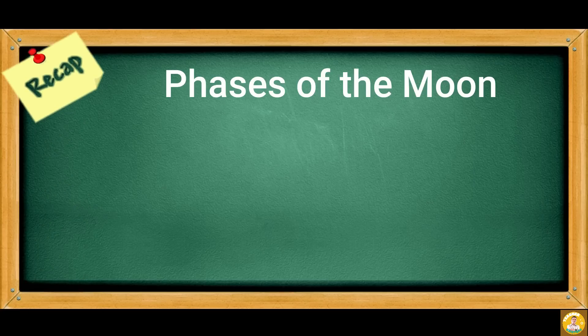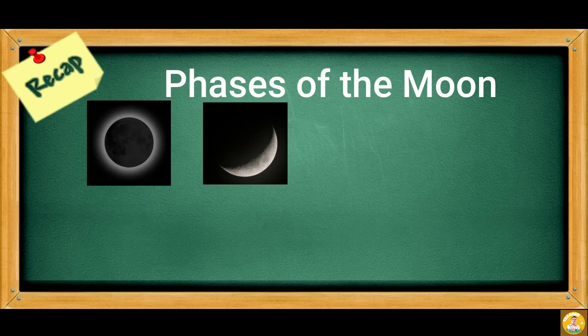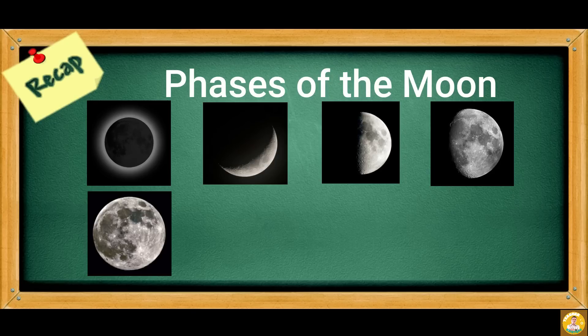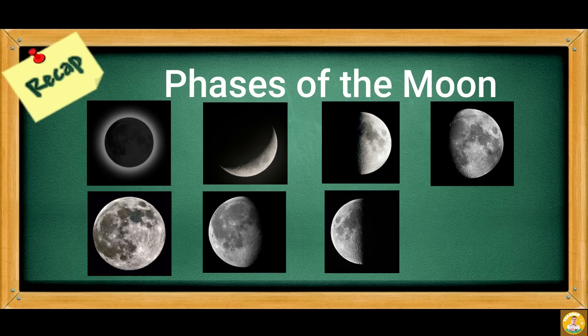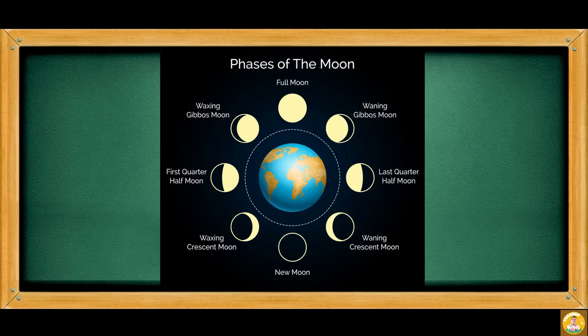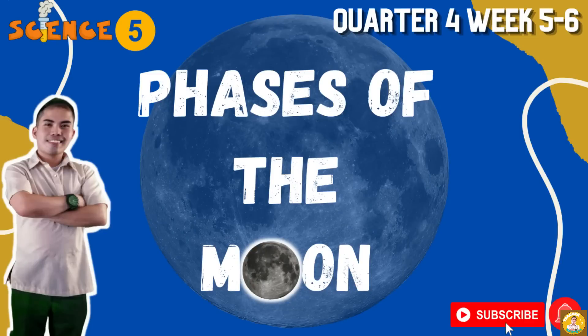Recap. The eight phases of the moon are: New Moon, Waxing Crescent, First Quarter, Waxing Gibbous, Full Moon, Waning Gibbous, Last Quarter, and Waning Crescent. That ends our lesson for today.